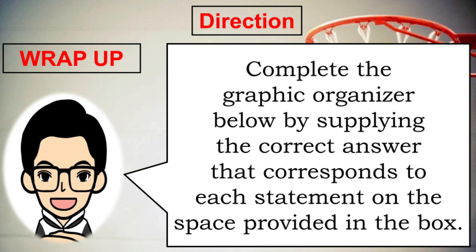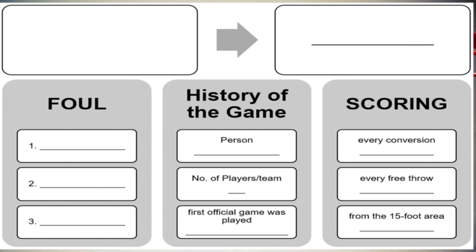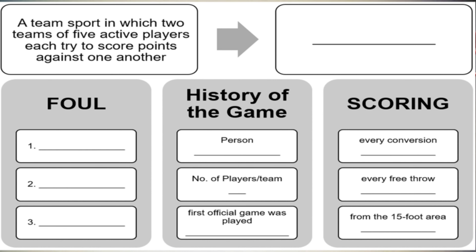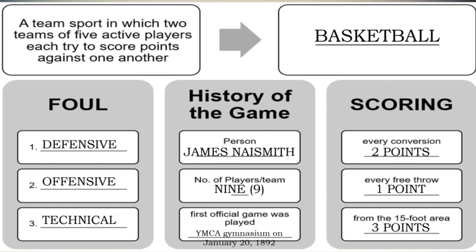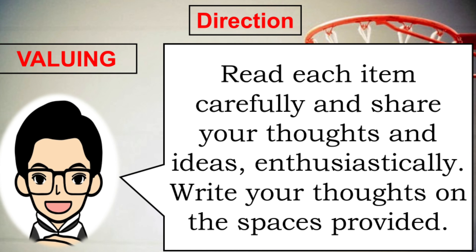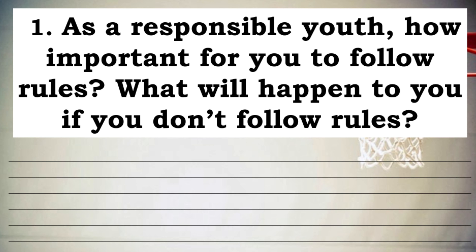For our wrap-up, complete the graphic organizer below by supplying the correct answer that corresponds to each statement. Write your answers on the space provided in the box. Also, read each item carefully and share your thoughts and ideas enthusiastically. Write your thoughts on the spaces provided. As a responsible youth, how important is it for you to follow rules? What will happen to you if you don't follow rules?